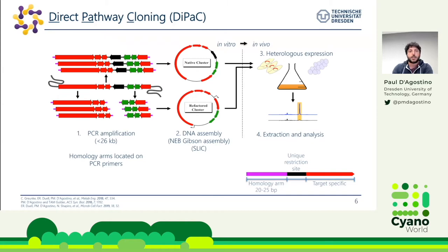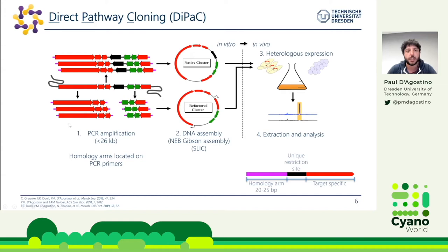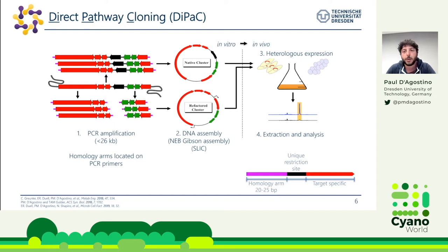DiPaC revolves around long-amplification PCR, generating PCR products of about 25–26 kb. PCR is used to generate linear pieces of DNA that have homology sequences introduced on the primers at the terminal ends. You can either amplify the biosynthetic gene cluster in its native arrangement, or specifically amplify certain parts using rational design — for example, removing a gene in black and rearranging another section so it forms an operon. Once you have all your linear pieces of DNA, you use DNA assembly such as Gibson assembly or SLIC to assemble all pieces together within an expression vector.